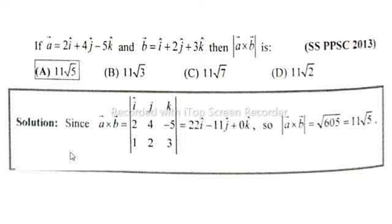Solution: since a cross b is equal to the determinant with i j k in first row, 2 4 minus 5 in second row, and 1 2 3 in third row. So i into